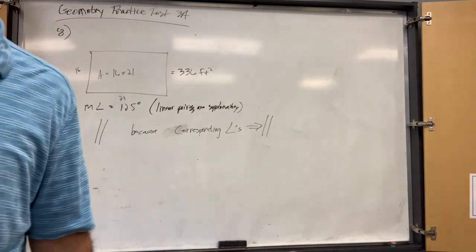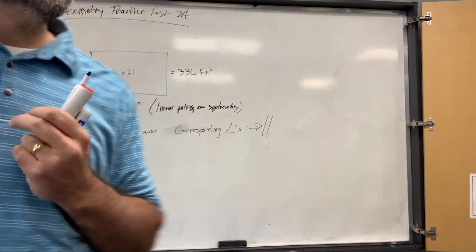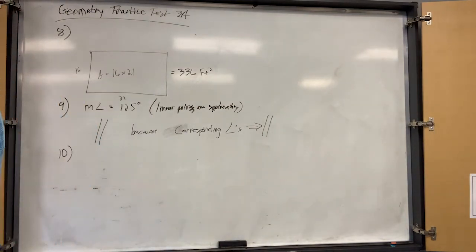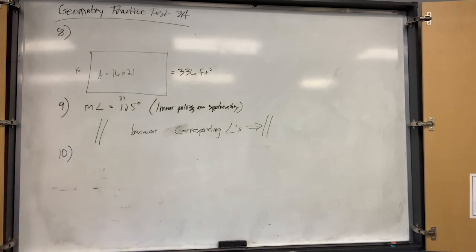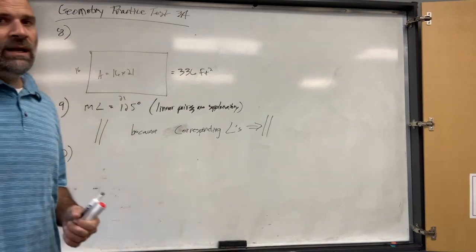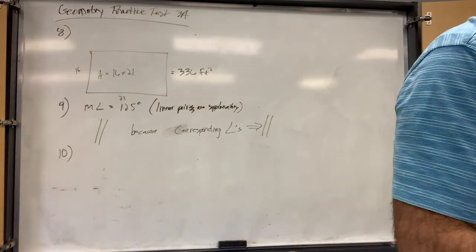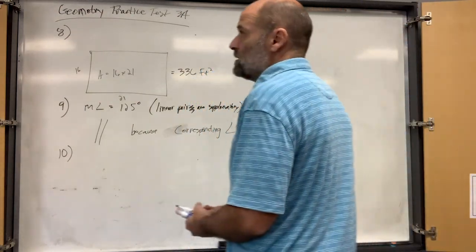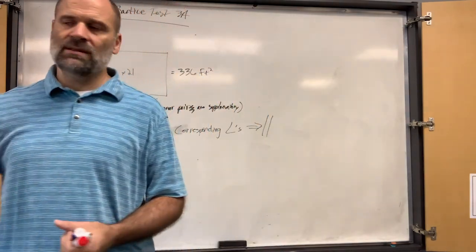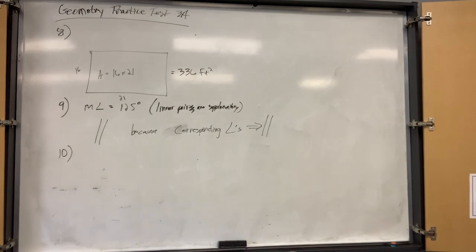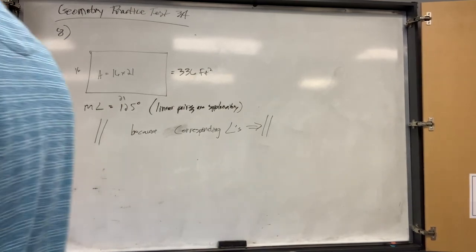Number nine is your first proof on a test. Tell me two things: first, I know angle 3 because I subtract from 180 since they're supplementary. Second, angle 3 is in the same position as 125 — bottom right — so they're corresponding angles, meaning the lines are parallel. Write out as much proof as you can.